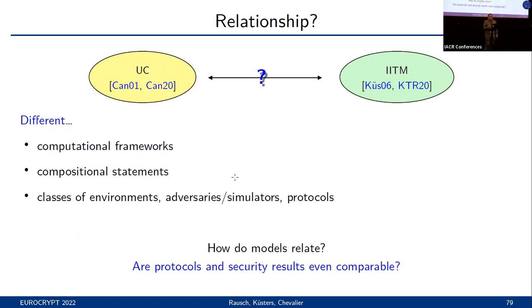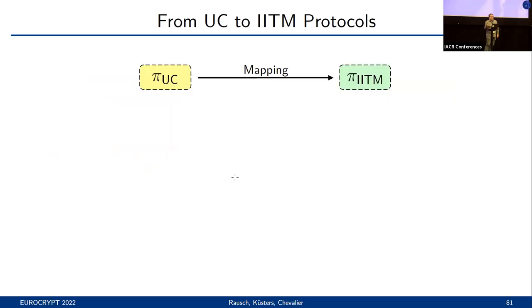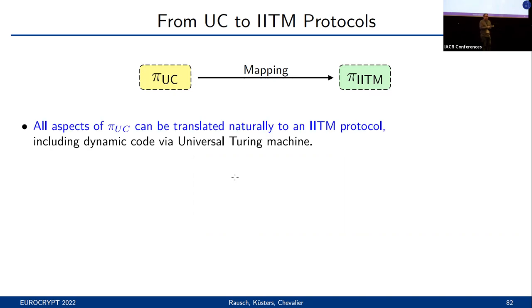Our work answers these questions. More specifically, we first propose a generic mapping taking an arbitrary UC protocol and constructing a corresponding IITM protocol. Without going into all the details, let me give some key insights. First, all aspects of the UC protocol can be translated naturally into the IITM setting — this even includes subroutines that might have dynamically generated machine code. In the IITM setting, we can capture this by including a specific universal Turing machine, where one instance directly corresponds to a UC instance whose code was dynamically generated and behaves in exactly the same way.